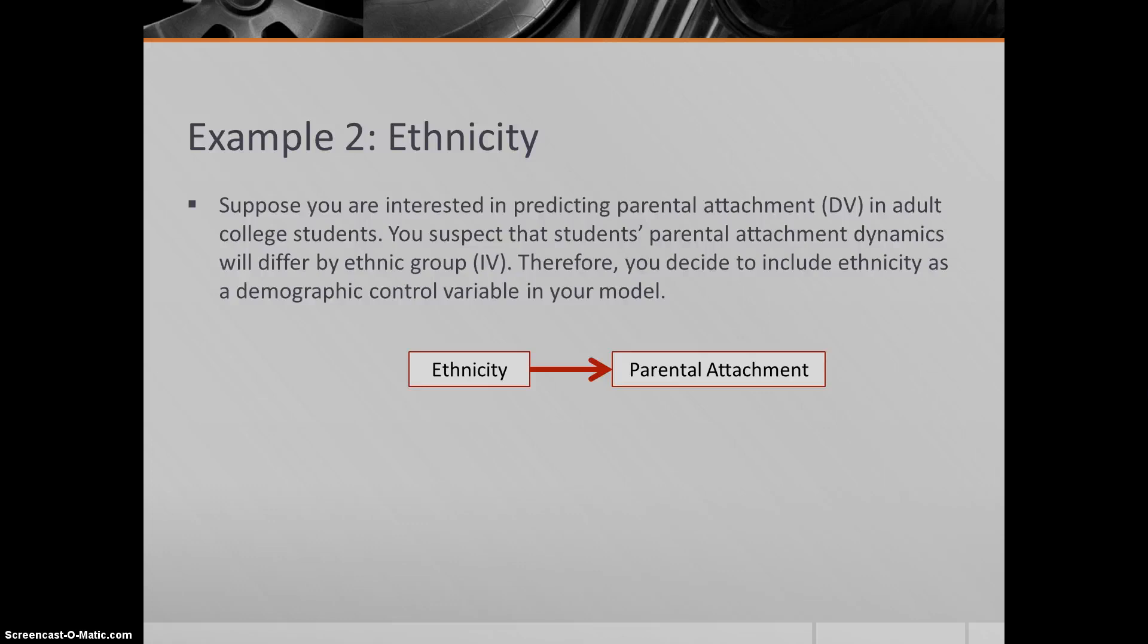So suppose you were interested in predicting parental attachment—that's your dependent variable—in adult college students. Maybe there's some other predictors that you're interested in, but in the process of doing your research, you determine that you think students' parental attachment dynamics are going to differ by ethnic group. So ethnic group would be an independent variable, and parental attachment would be your dependent variable. You decide to include ethnicity as a demographic control variable in your model. So it may not be the variable that you're ultimately interested in, but you want to clean up some of that variation associated with ethnicity before you try to look at maybe some other more substantively meaningful variables.